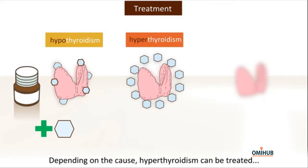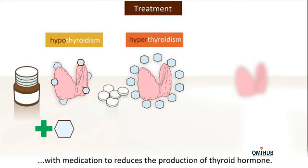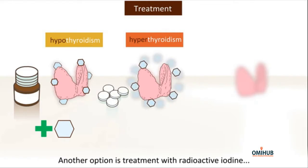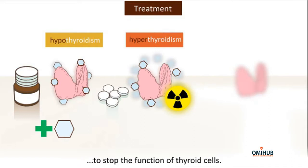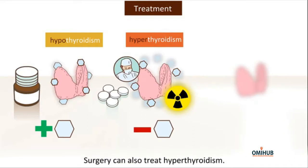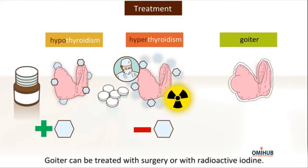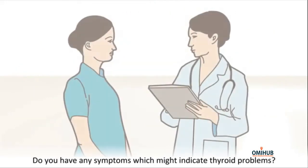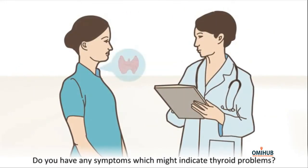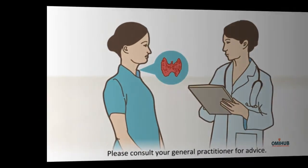Hyperthyroidism can be treated with medication to reduce the production of thyroid hormone. Another option is treatment with radioactive iodine to stop the function of thyroid cells. Surgery can also treat hyperthyroidism. Goiter can be treated with surgery or with radioactive iodine. If you have any symptoms which might indicate thyroid problems, please consult your general practitioner for advice.